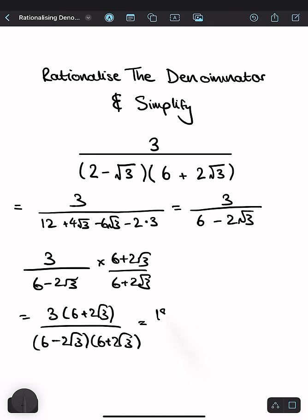3 times 6 is 18, 3 times 2√3 is plus 6√3 over 6 times 6 is 36. 6 times 2√3 is 12√3 minus 12√3, so that just cancels out.